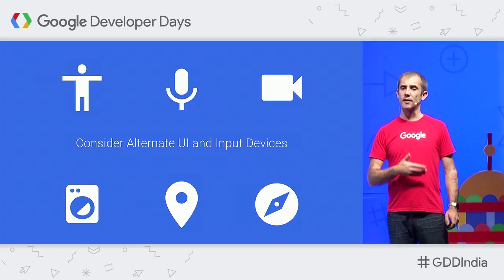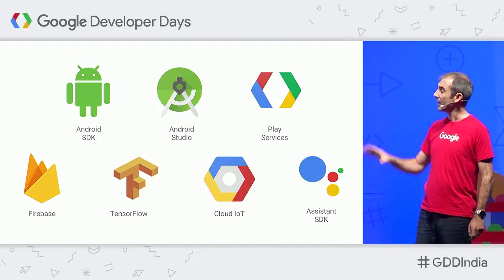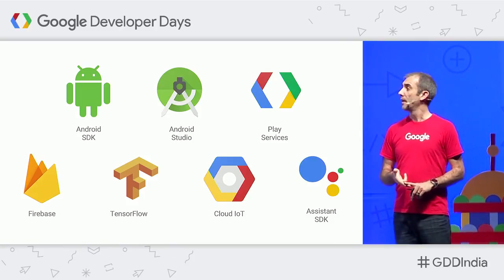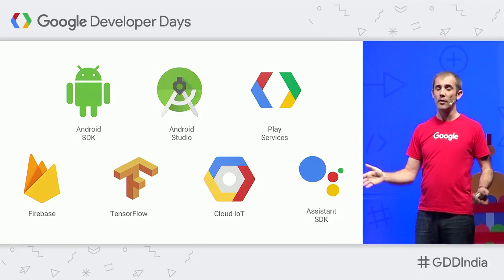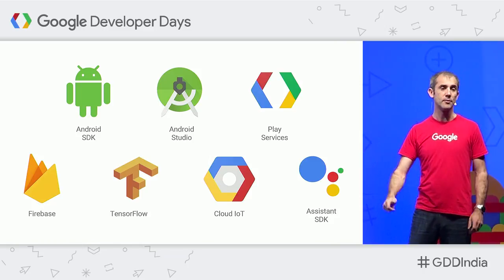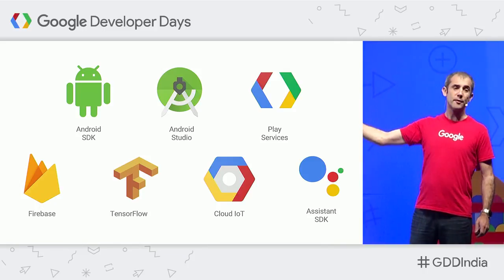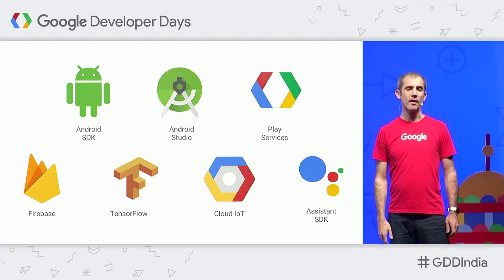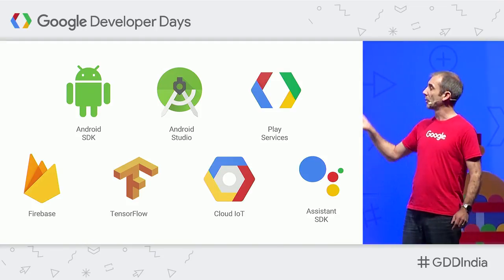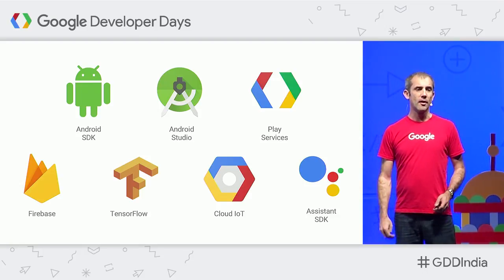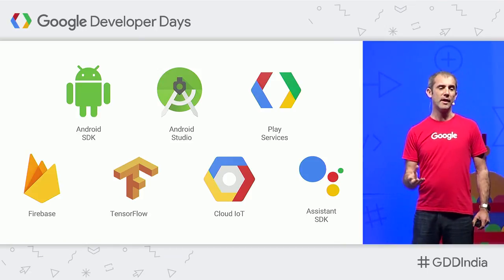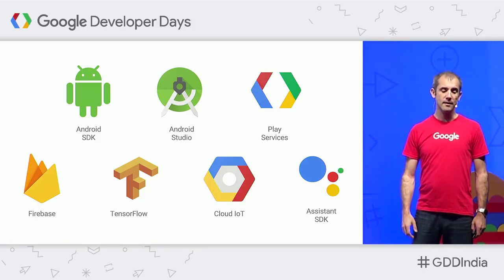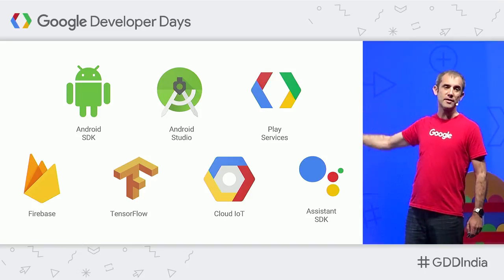Sensors are read in exactly the same way as on a phone through the Android SDK framework. You develop with the full power of Android — using the same Android SDK for phone development, Android Studio, and any language supported including Kotlin. You have Google Play Services, Firebase, TensorFlow, Google Cloud IoT, and you can embed the Google Assistant into your device. IoT developers are really excited about putting TensorFlow into devices — you can now do machine learning on-device without needing the cloud or Wi-Fi, which a very low-end microcontroller can't do.